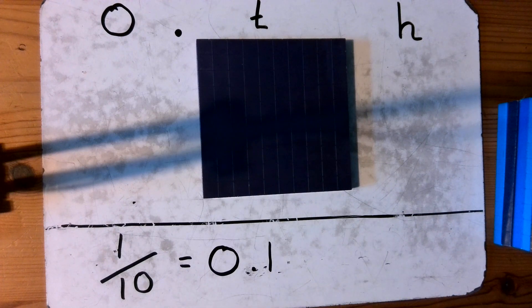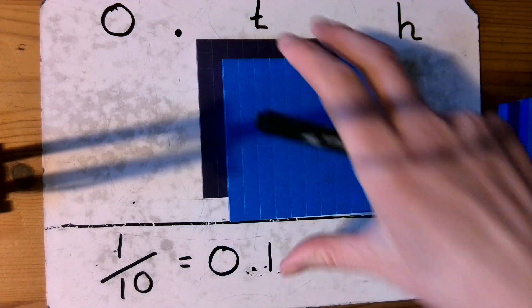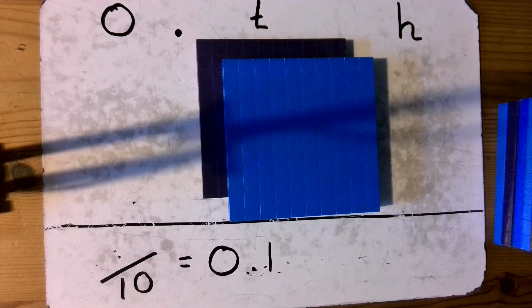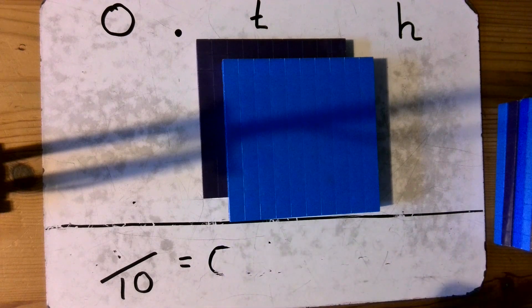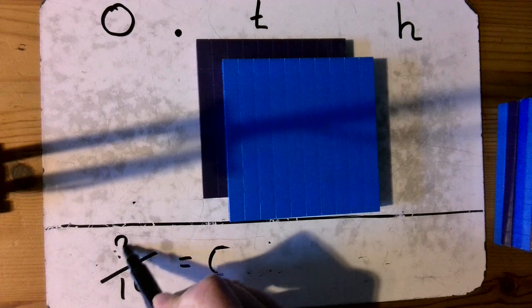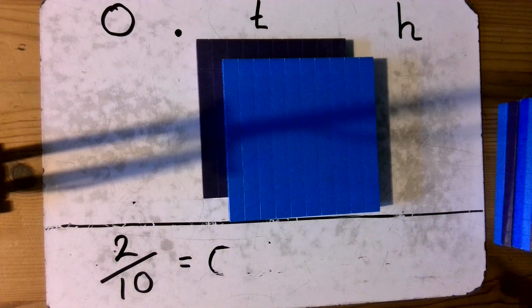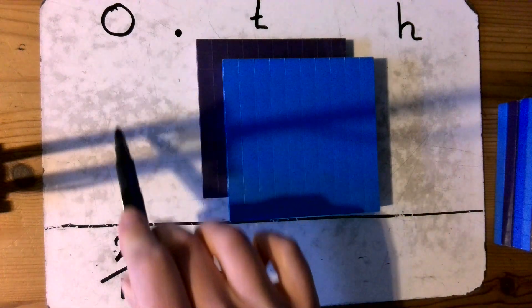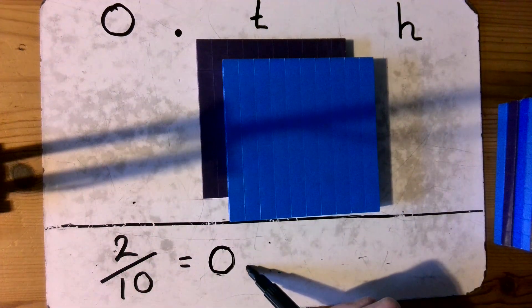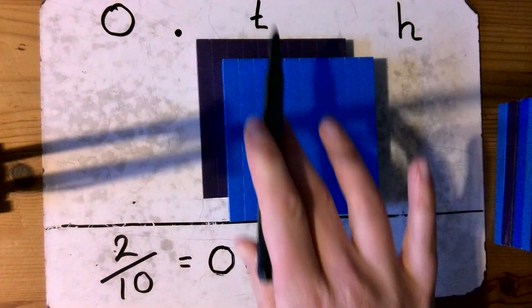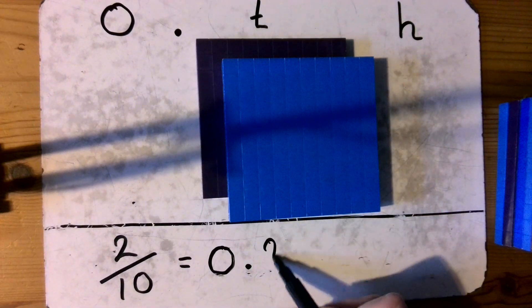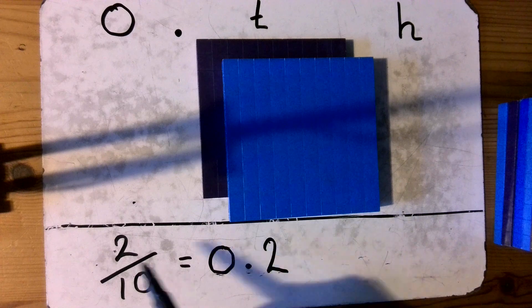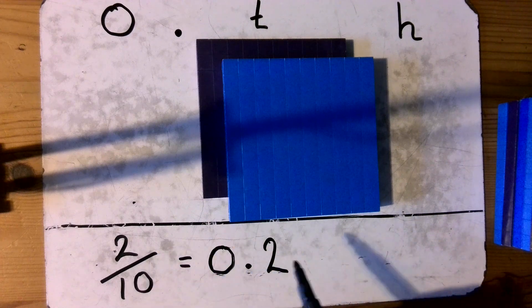How about then if I have two tenths? To write that as a decimal number I still have no whole numbers. Adding in my decimal point to show that I'm now dealing with part of a whole. I'm looking at my tenths column and I have two tenths. So here I can see that two tenths is equivalent to zero point two.